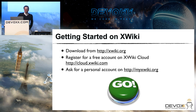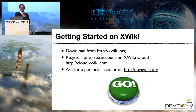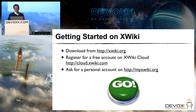How do you get started? You can download from xwiki.org — it's an open source project, LGPL. You can also register for a free account on xWiki Cloud at cloud.xwiki.com. We even have a farm on myxwiki.org, which is free for individuals. It's actually our live testing platform for the development team, where we put the latest version of xWiki for real-life testing, and you can have an instance there for yourself. Thank you very much.